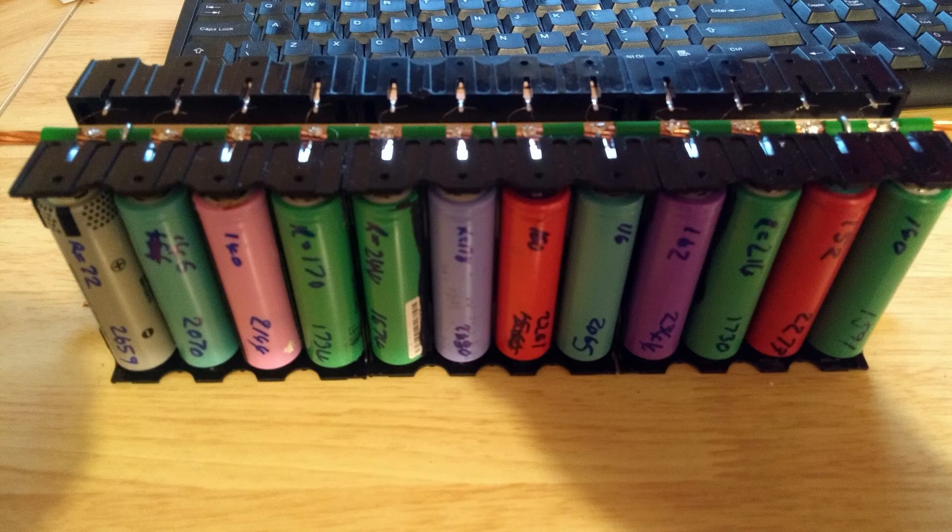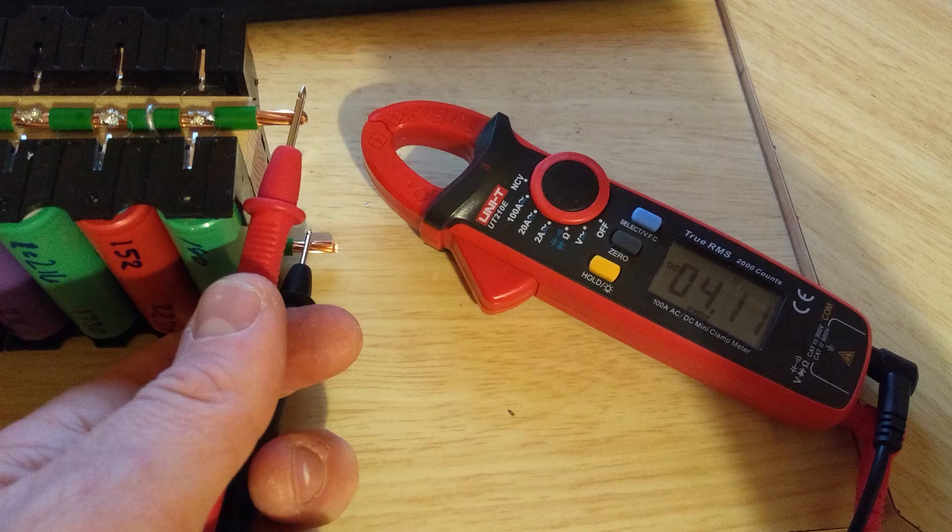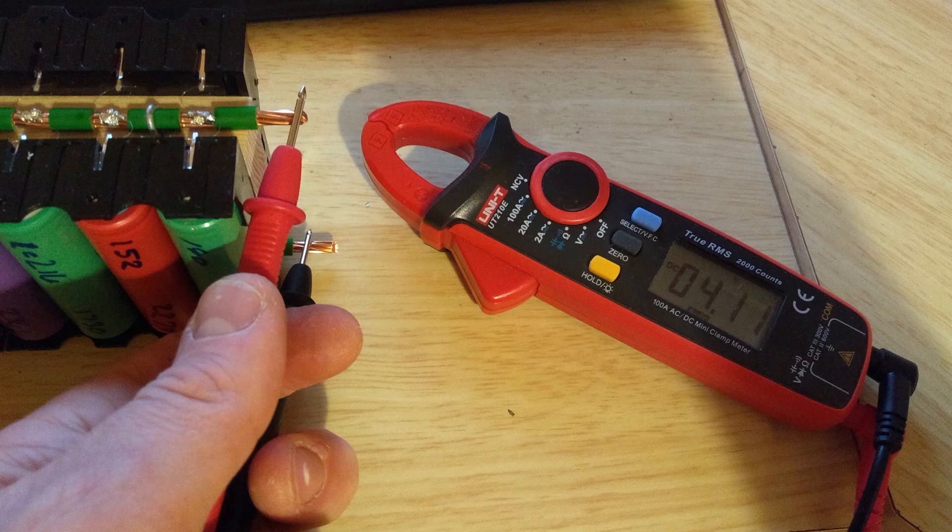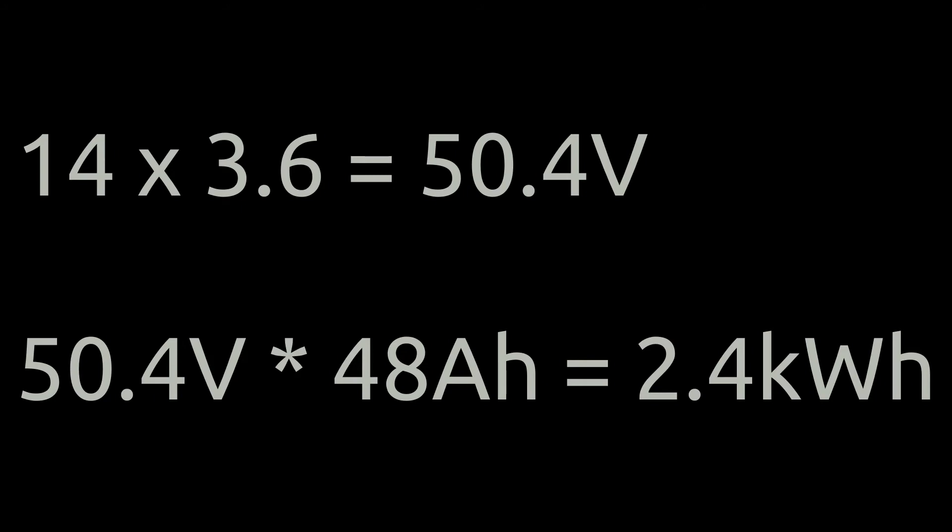Once all the fuse wires were in place, the first batch of cells could be inserted. Here I am testing the voltage from my first block. I decided in the end that I would build a 48 volt battery and that would therefore require 14 of these modules in series. This should yield about 2.4 kilowatt hours of energy storage in total.